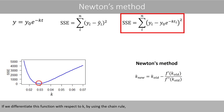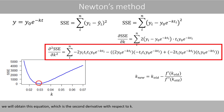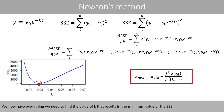If we differentiate the SSE function with respect to k using the chain rule, we get the first derivative. And if we differentiate that equation with respect to k using the product rule, we obtain the second derivative. We now have everything we need to find the value of k that results in the minimum value of the SSE function.